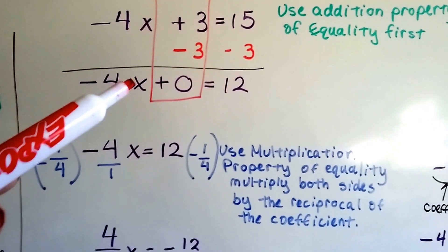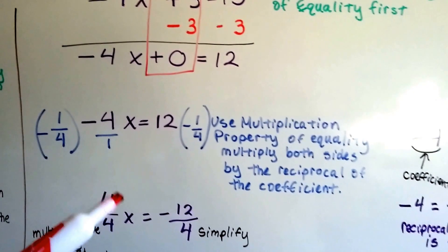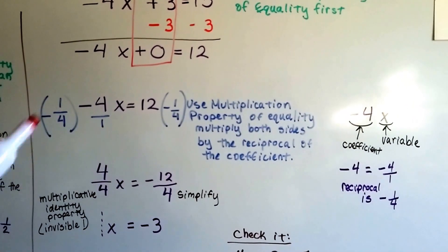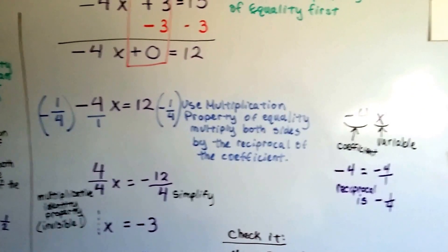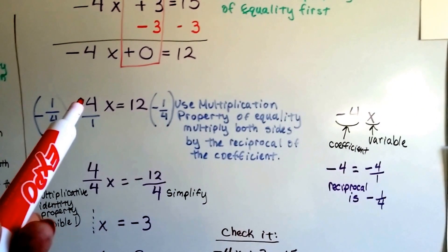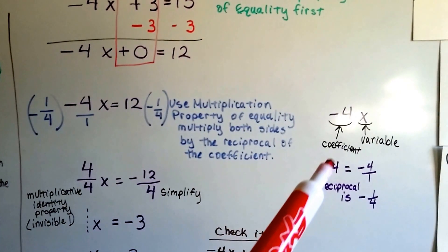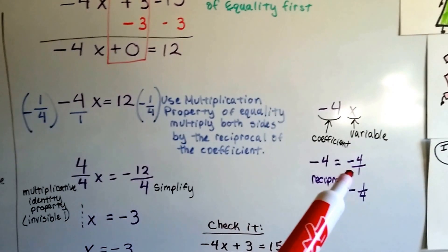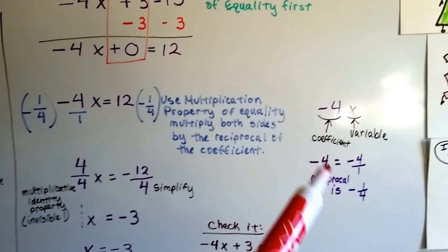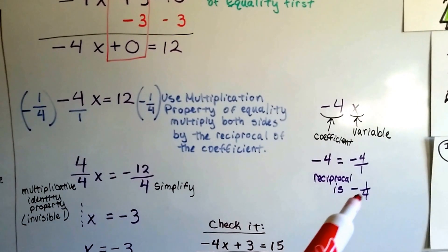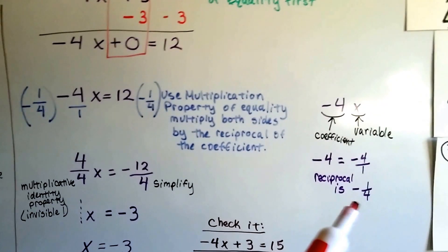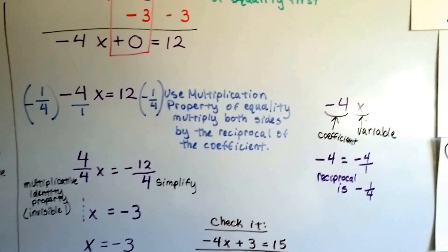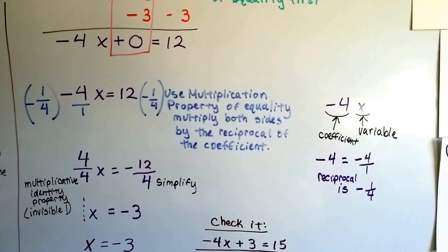We end up with negative 4x equals 12. Now we need to use the multiplication property of equality to multiply both sides by the reciprocal of the coefficient. What's the coefficient? It's the number in front of the variable, the negative 4. And the reciprocal of negative 4 would be, if that's negative 4 over 1 as negative 4, its reciprocal would be flipped around negative 1 fourth. Remember, reciprocals keep the sign.